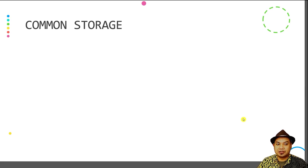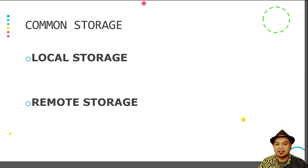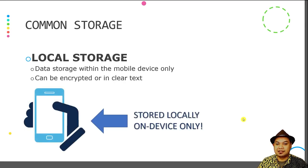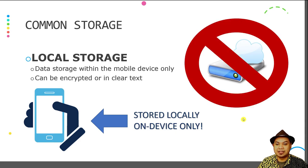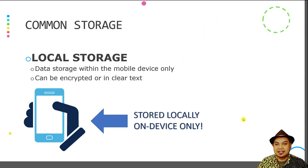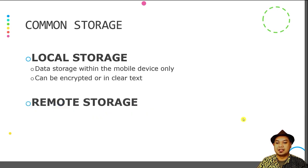Commonly you may have local storage and remote storage. For local storage, the data is stored inside the mobile device only and the data is not being transferred to a remote third-party server. Additionally, local storage can also be encrypted or in clear text. In order to ensure that the data can be stored in complete privacy, the developer can implement encryption before the data is stored in local storage.